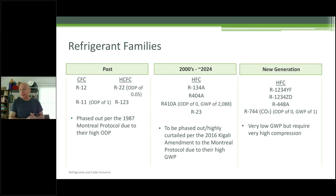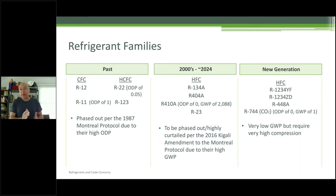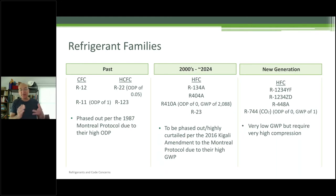The new generation refrigerants — HFCs — are blends. I'm sure you've started to specify R744, which is CO2. We talk about CO2 being a bad thing for global warming, but one pound of CO2 into the atmosphere is one pound of CO2, as opposed to 2,000 for 410A. The other advantage of CO2, even though it works at much higher pressures, is that you need much less of it per ton — roughly 1 to 1.2 pounds per ton versus 4 or 5 pounds per ton for 410A. It has very low global warming potential.